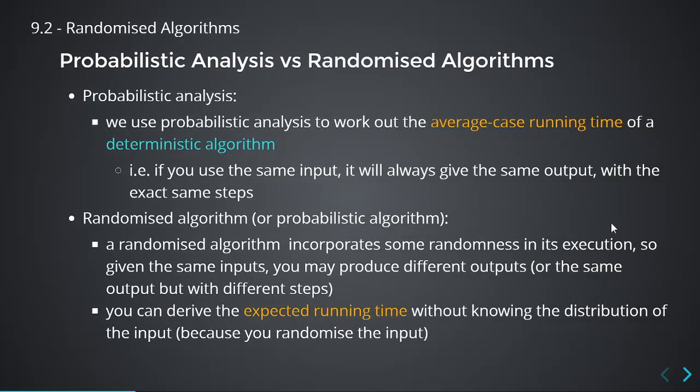Before we go on, I want to be perfectly clear about what we're doing. In the previous lecture, we did something called probabilistic analysis. We have a deterministic algorithm — there's no randomness about the algorithm. If you give it the same input, it will give you the same output with the exact number of steps. We're using probabilistic analysis to work out the average case running time by looking at an average input.